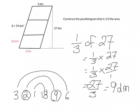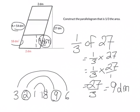So the height is 9 decimetres. As a point of interest, the height is one-third of the original parallelogram's height, and the area is also one-third of the original parallelogram's area.